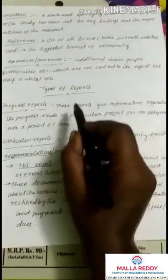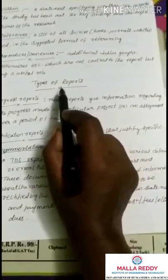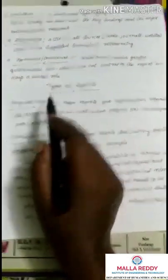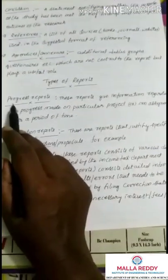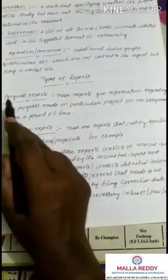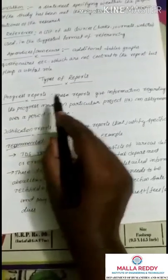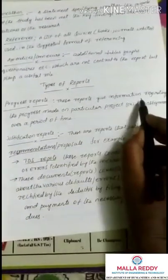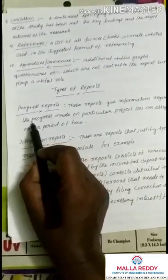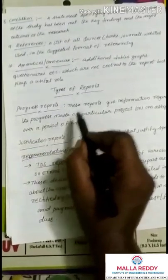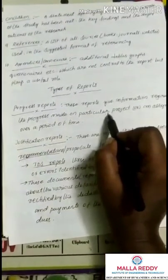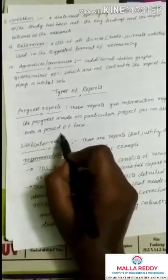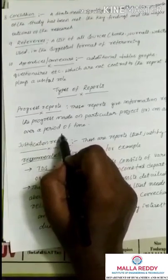Let us continue our topic: types of reports. Progress reports give information regarding the progress made on a particular project or assignment over a period of time.